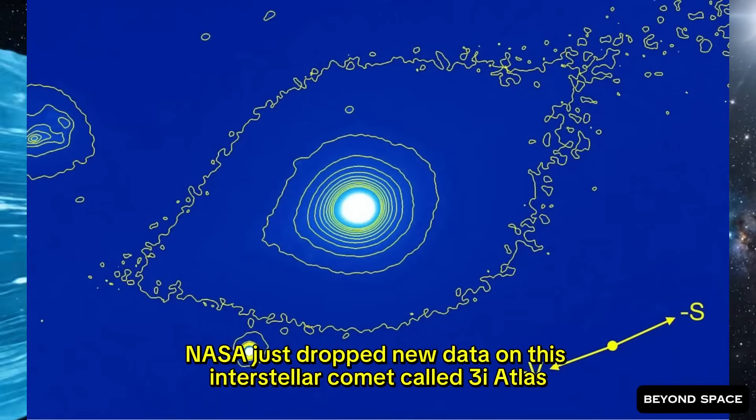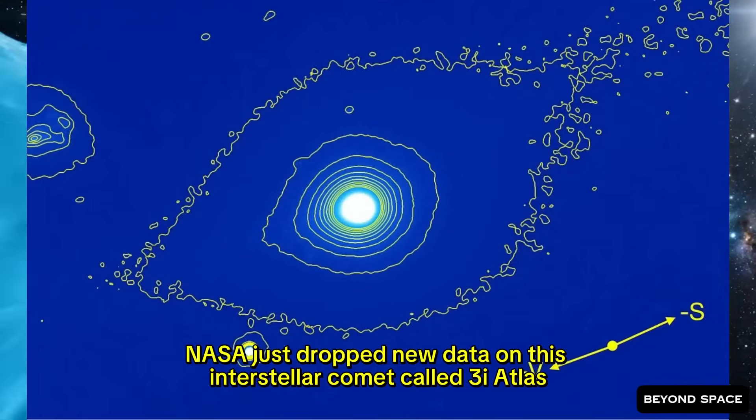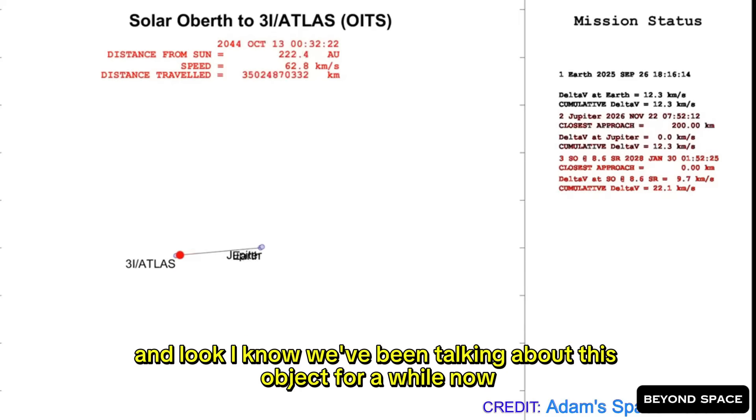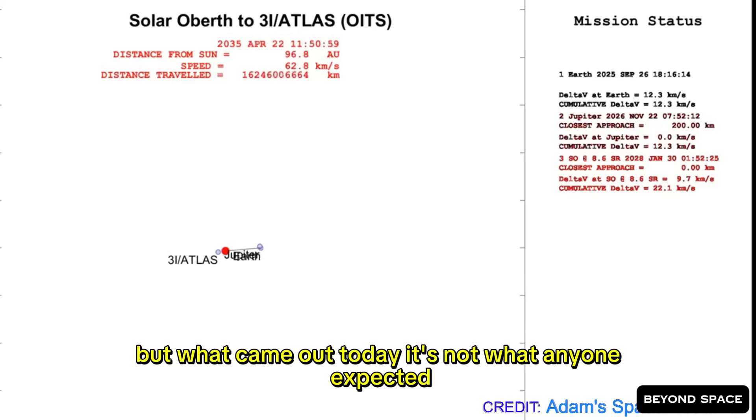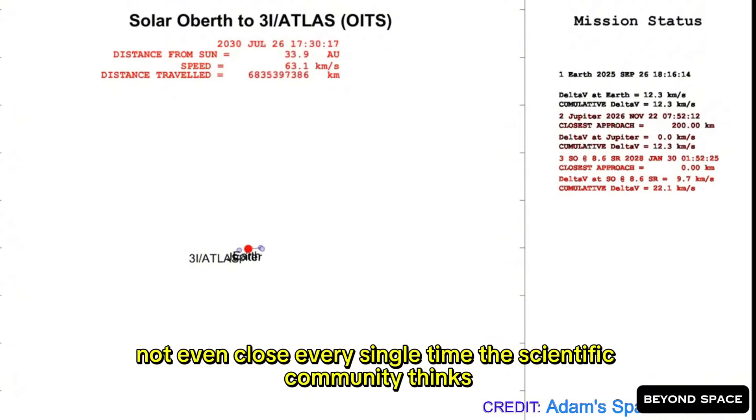NASA just dropped new data on this interstellar comet called 3i Atlas. I know we've been talking about this object for a while now, but what came out today? It's not what anyone expected. Not even close.